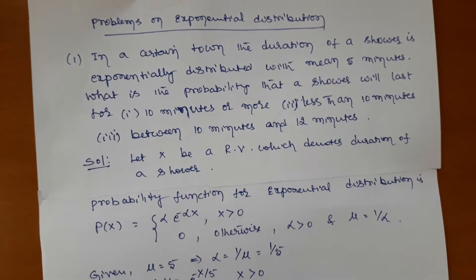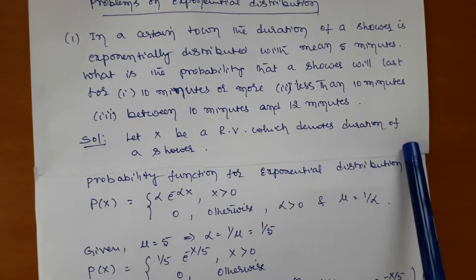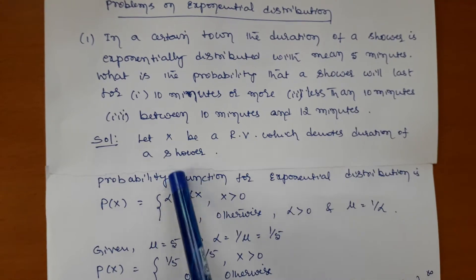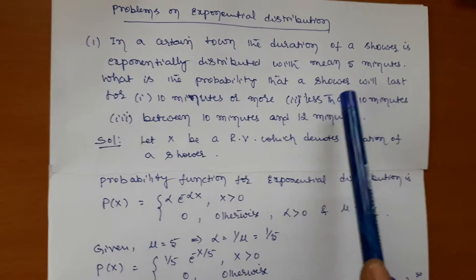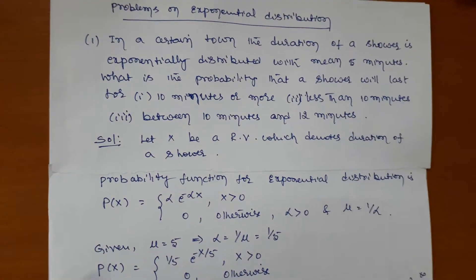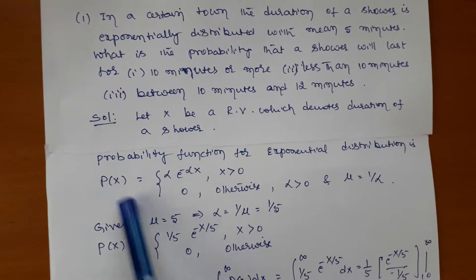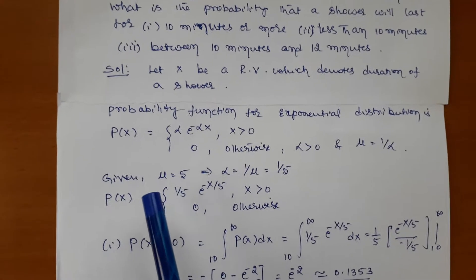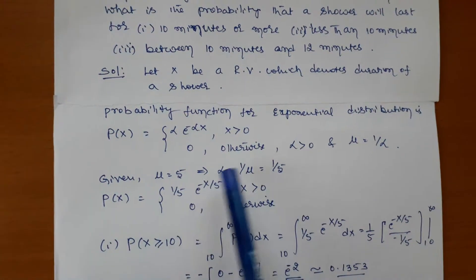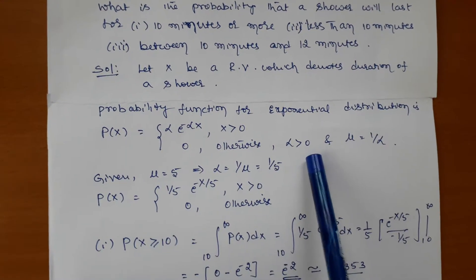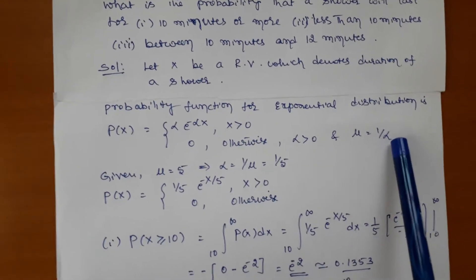Since the problem involves exponential distribution, we first define our variable. Let X be the random variable denoting the duration of a shower. The general probability density function for exponential distribution is f(x) = α · e^(−αx) for x > 0, and 0 otherwise, where α must be positive. The mean formula is μ = 1/α.